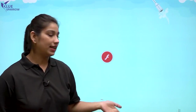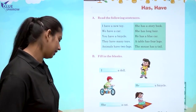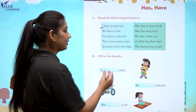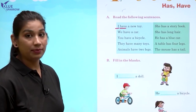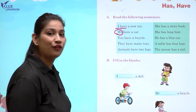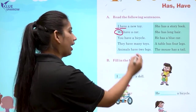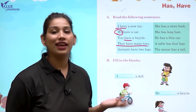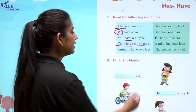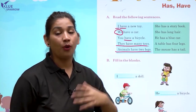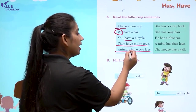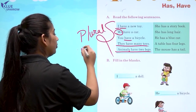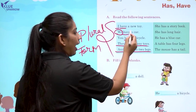I'm sure students you all understood the concept. Let us read a few sentences. I have a new toy — mere paas ek new toy hai, I ke saath have use karte hai. We have a car — hamaare paas car hai, we use have with we. You have a bicycle — you ke saath bhi hum have ka use karte hai. They have many toys — they ke saath bhi have ka use karte hai, because wo plural form mein hai. Animals have two legs — animals matlab bohut saare animals ki baat ho rahi hai, isliye ham ne have lagaya hai. Yeh saare plural form hai, plural form mein hum have ka use karte hai.